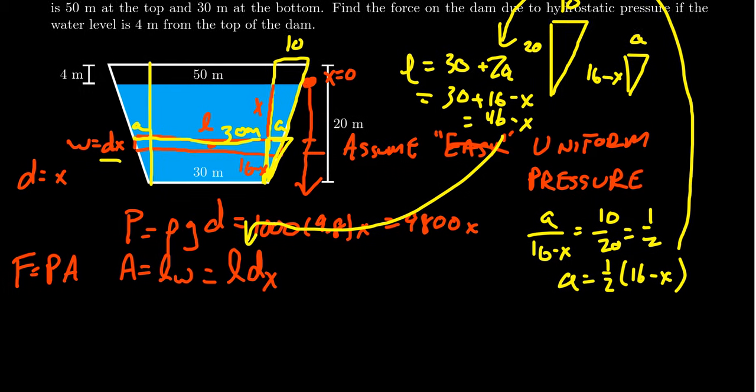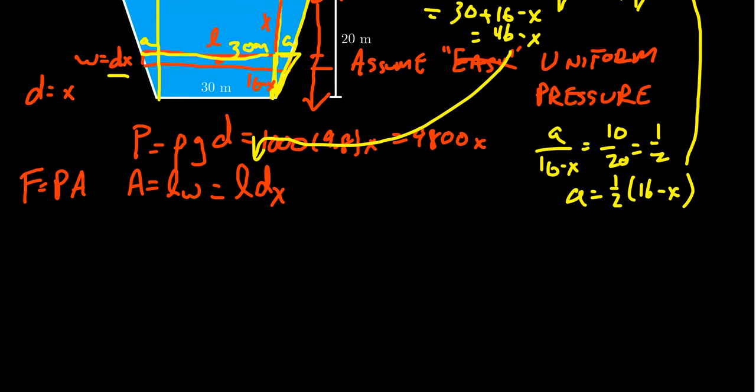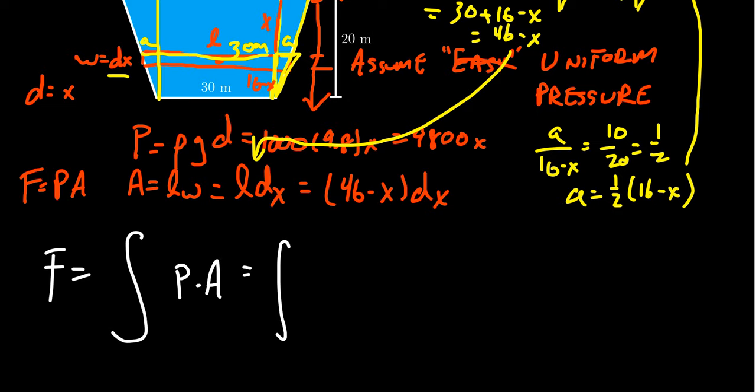And so by putting these together, the hydrostatic force of the water against this dam is going to be pressure times area, in which case we see the pressure is 9,800x times the area is 46 minus x dx.